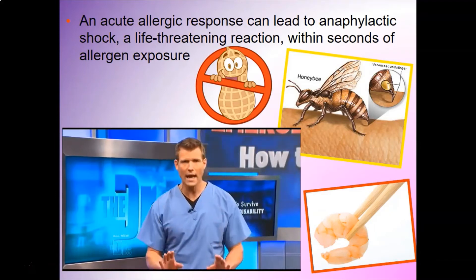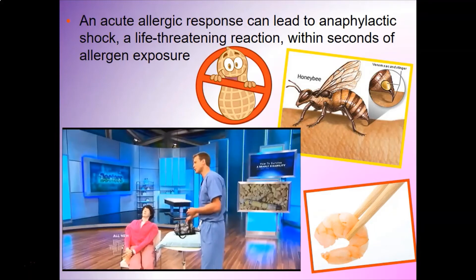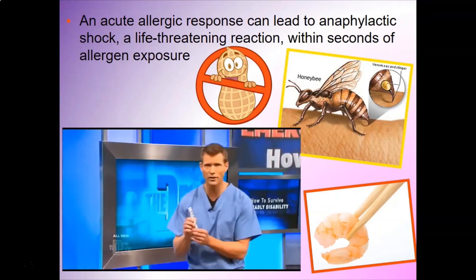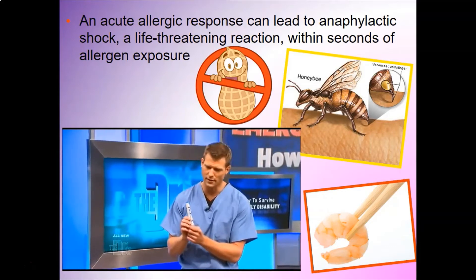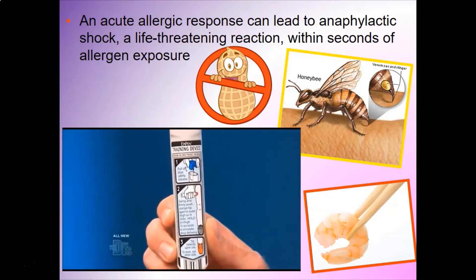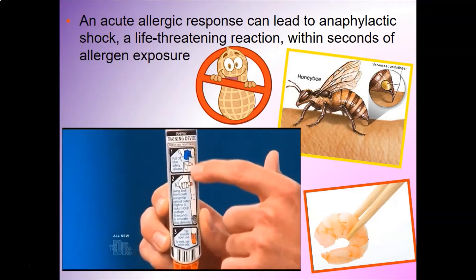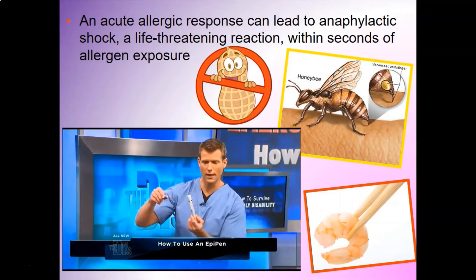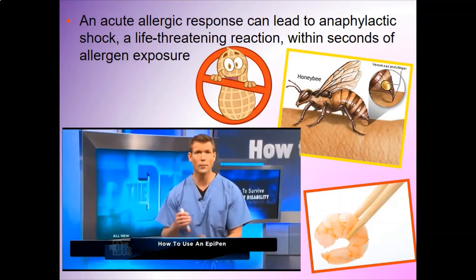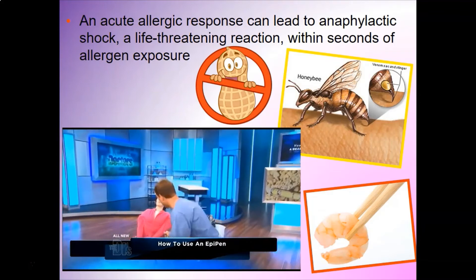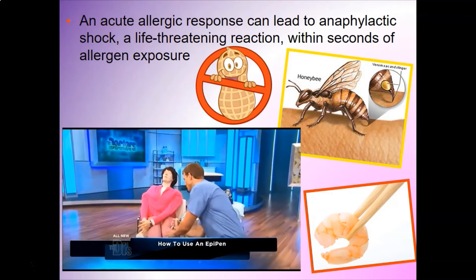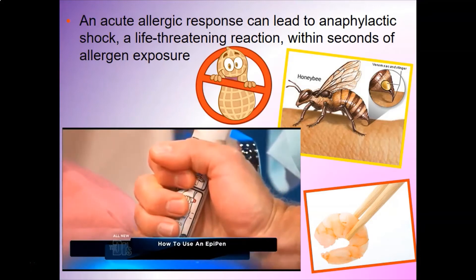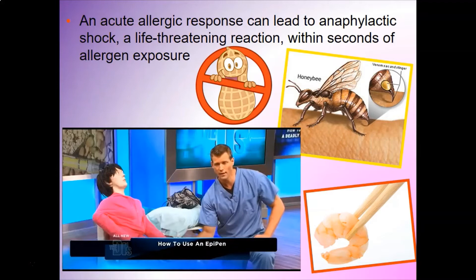Luckily, we have something called an EpiPen, which can be truly life-saving. It staves off what we call circulatory collapse. Look at this label very closely - it's quite simple. You're going to pull off the safety release, put it into a bigger muscle - the thigh is a very good spot - auto-inject into the thigh, hold it for 10 seconds, and then you want to call 911 and get help.